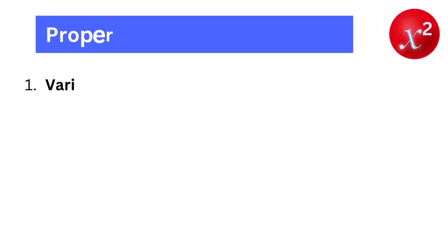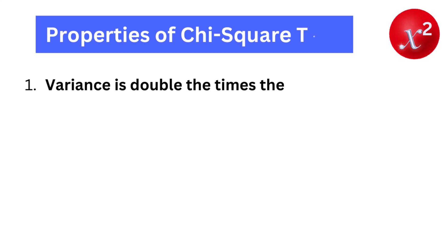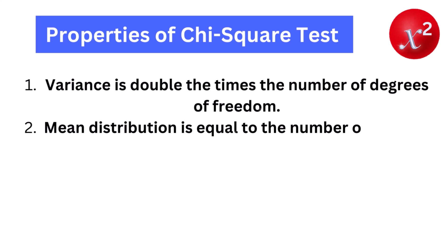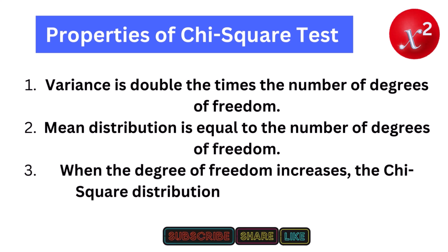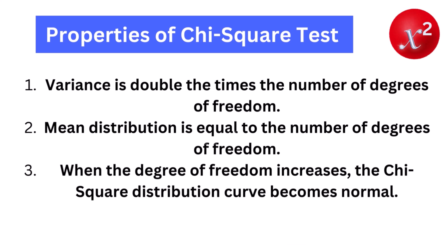Properties of chi-square test. Variance is double the times the number of degrees of freedom. Mean distribution is equal to the number of degrees of freedom. When the degree of freedom increases, the chi-square distribution curve becomes normal.